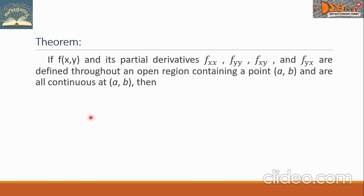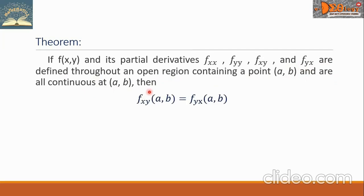Now we have a theorem. If the function f of x, y and its partial derivatives are defined throughout an open region containing a point (a, b) and are all continuous at (a, b), then f sub xy at the point (a, b) is equal to f sub yx at the point (a, b). Or simply, f sub xy equals f sub yx.